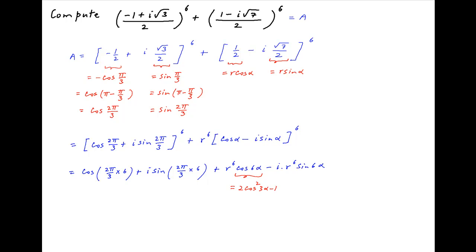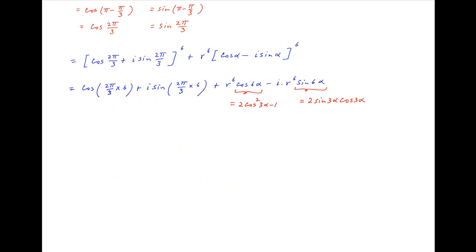Now cos 6 alpha can be written as 2 times cos squared 3 alpha minus 1, and sin 6 alpha can be written as 2 times sin 3 alpha times cos 3 alpha. Therefore, a is equal to cos of 4pi plus i times sin 4pi plus 2 times r raised to the power 6 times cos squared 3 alpha minus r raised to the power 6 minus 2i r raised to the power 6 times sin 3 alpha cos 3 alpha.